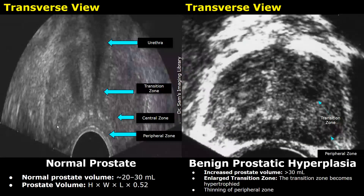In this image, the central zone is between the peripheral and transition zones. The echogenic area is the peripheral zone, the hypoechoic area is the transition zone, and this is the urethra. In BPH, the prostate may become more rounded in appearance and more hypoechoic and heterogeneous, with an enlarged transition zone.